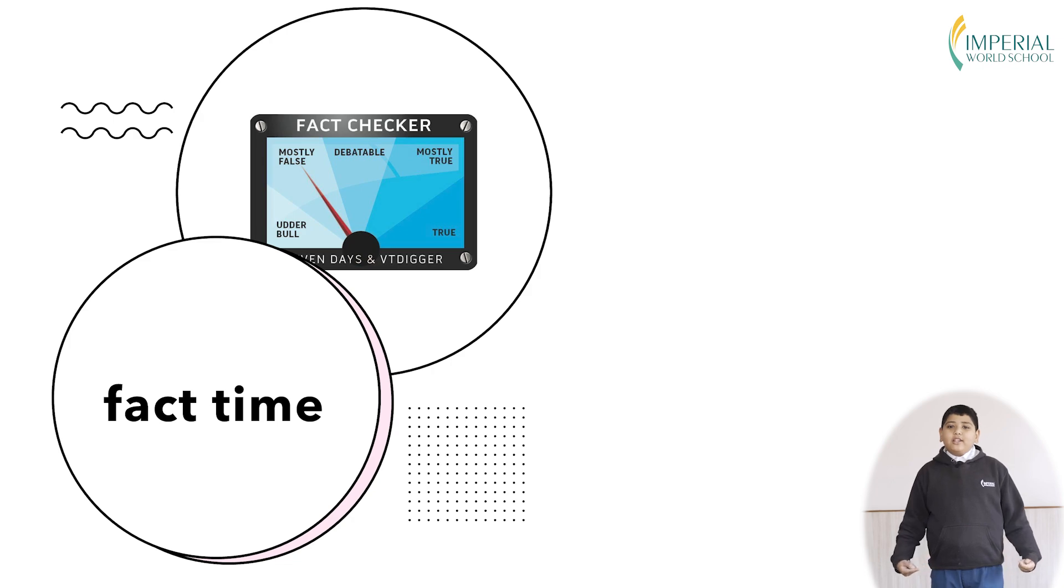Fact time. Did you know that the phases of the moon is also called the lunar cycle? Lunar meaning moon and cycle meaning going again and never stopping. Lunar is a term that comes from Greek mythology which means moon.